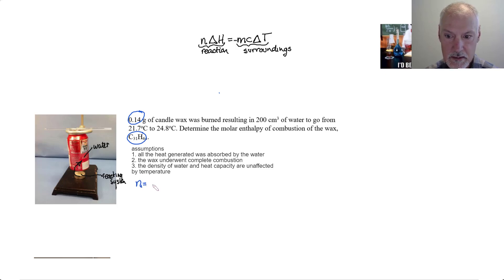So, N we would calculate by taking the mass and dividing by the molar mass. So, in this case 0.14 grams and the molar mass of that we can get from using the periodic table, 436.9 grams per mole. And putting that through a calculator I get 3.20 times 10 to the negative 4 moles. Now, I am carrying one more significant digit than I need to because I will round off at the end.